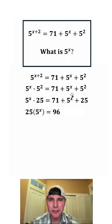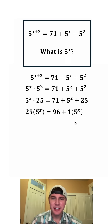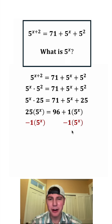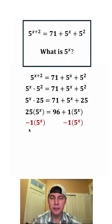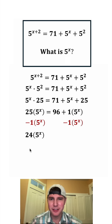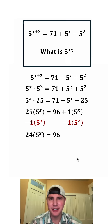And this 5 to the power of x can be thought of as 1 times 5 to the power of x. Next, let's subtract this 1 times 5 to the power of x from both sides of the equation. 25 times 5 to the power of x minus 1 times 5 to the power of x is 24 times 5 to the power of x, and that'll be equal to 96.